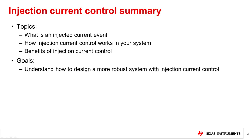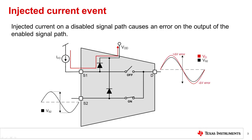We will start by identifying an injected current event and discuss the impact this may have on your system. An injected current event occurs when current is injected into the pin of a disabled signal path and raises the node voltage above the supply voltage. In a device with no control circuitry, the internal protection diode will be forward biased and the supply rail voltage will be affected, causing an error in the output signal voltage.